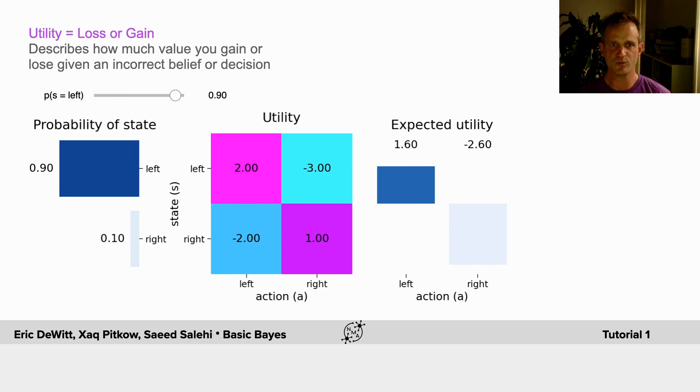We're going to use this widget to explore this decision space. Here, we're only considering the prior probability, or just the probability of the state, and the utility.